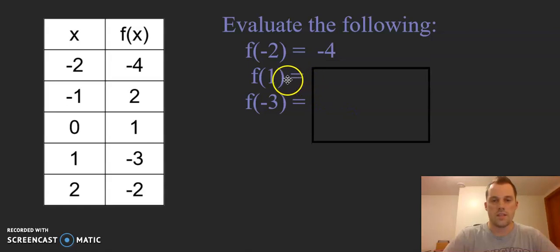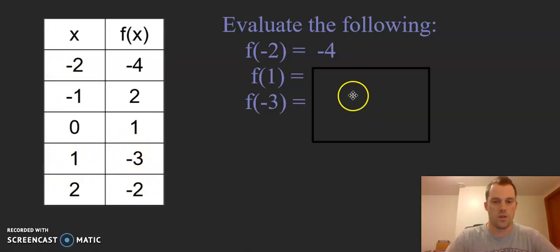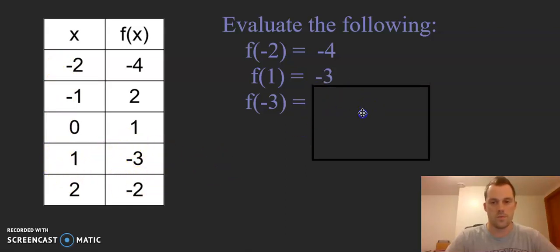In this case, f of 1. Again, we go to our x column. 1 is our input into our function f, and our output is negative 3. So we get negative 3.